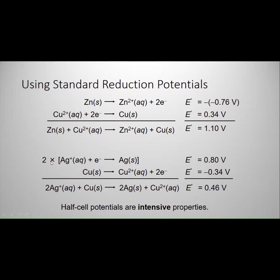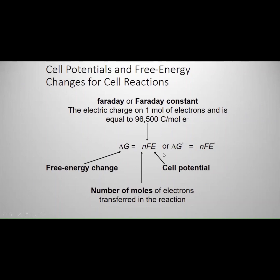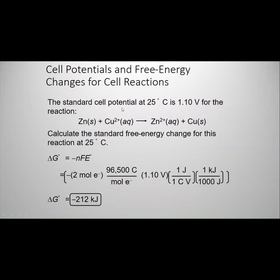This is under standard conditions when you see the circle here that indicates a standard condition. So here's an example: calculate the ΔG for this galvanic cell if the cell potential is 1.10 V. So basically, using what we know, the number of electrons are two.